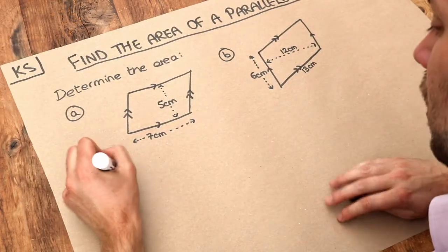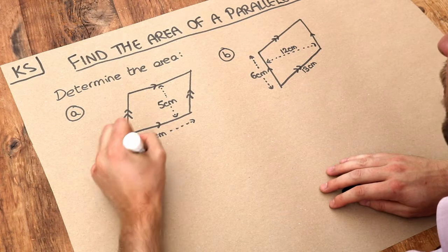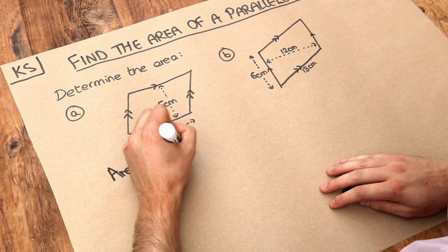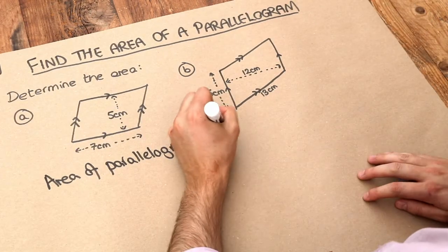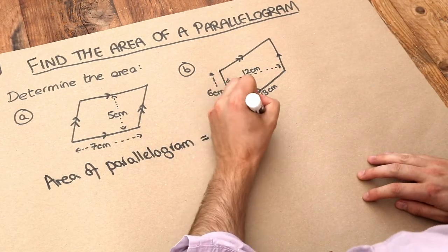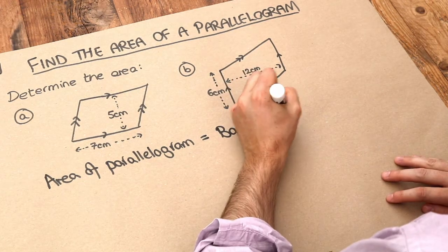And there's a very simple formula to find the area of a parallelogram. And it's pretty much the same as a rectangle. And all you have to do is just do the base times by the perpendicular height. Now I'll explain what that means.